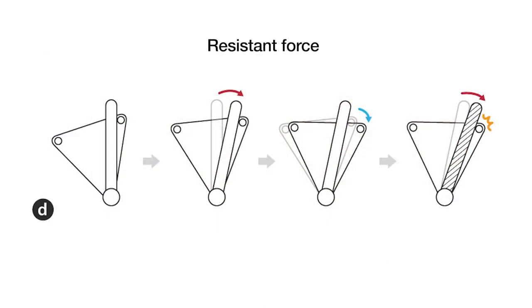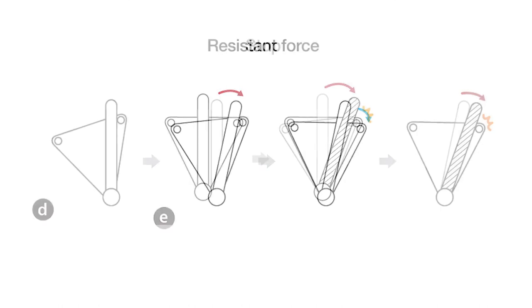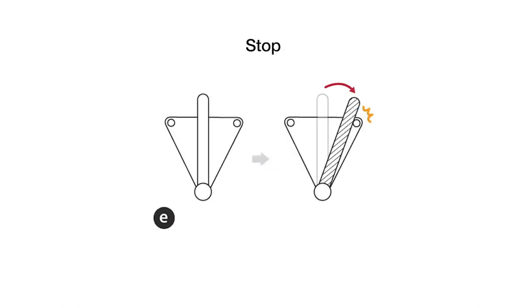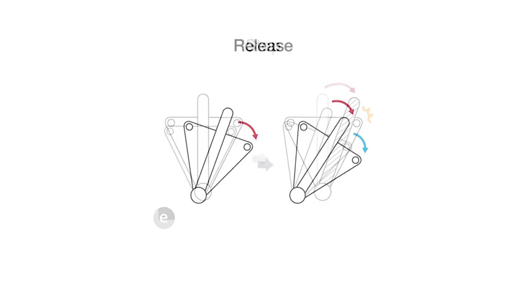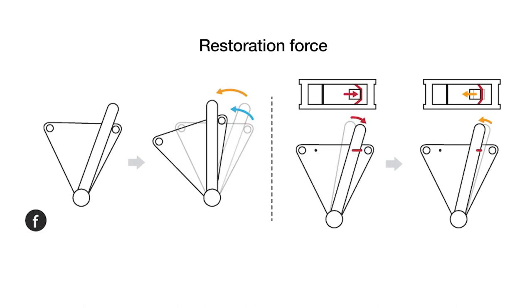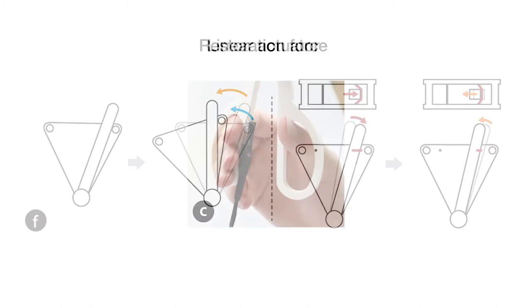HapLinkage provides a variety of haptic feedback including resistance force by providing the cage in response to user input, stop by proactively positioning the cage, release by suddenly disengaging the cage, and restoration force by leveraging a rubber band and moving the cage in response to user input.